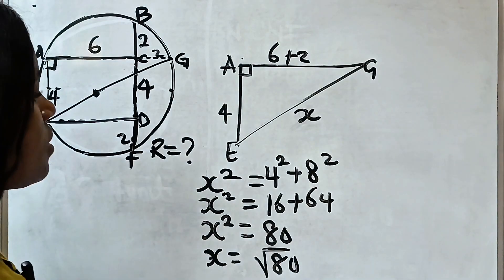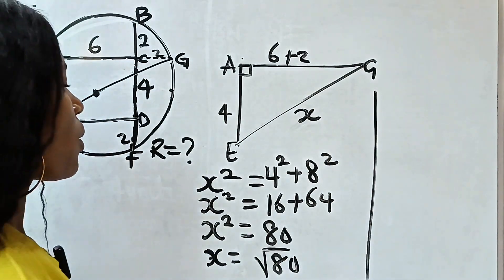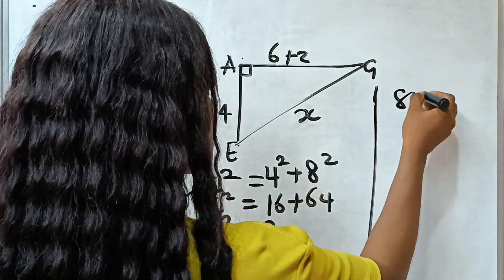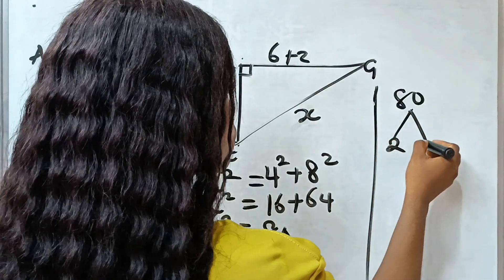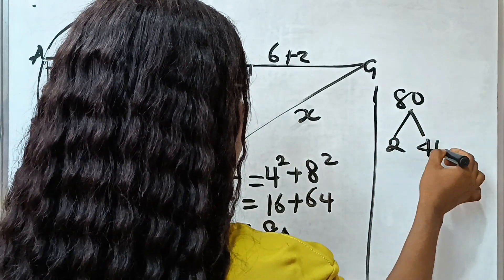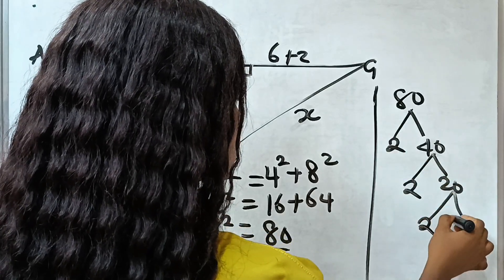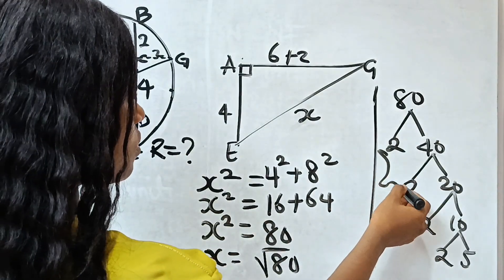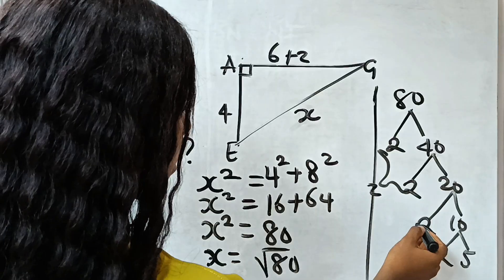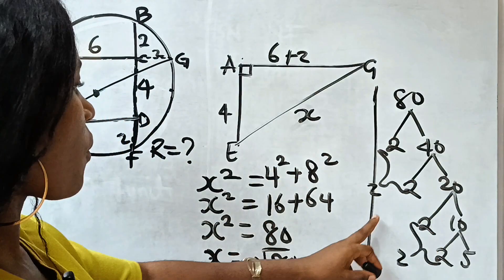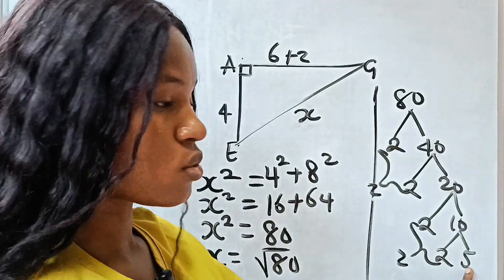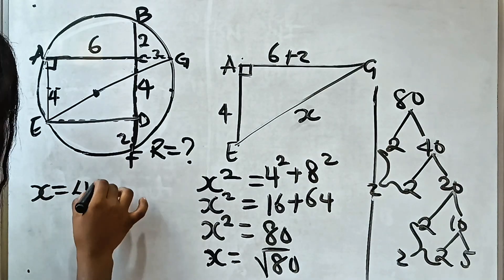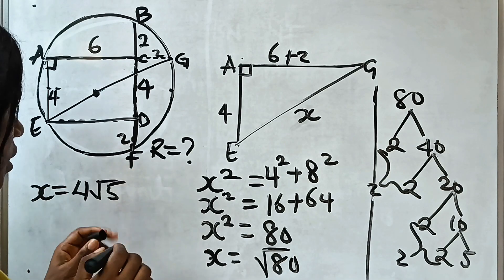What is square root of 80? Let's do prime factorization. We have 2 times 40, 2 times 20, 2 times 10, and 2 times 5. We take one 2 out of this, take another one 2 out of this. So now we have 2 times 2, which is 4, 4 root 5. So it means that our X is equal to 4 root 5.